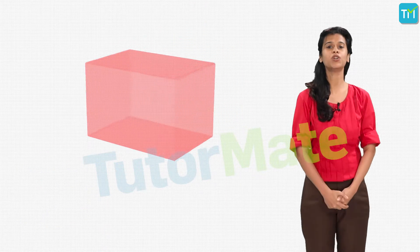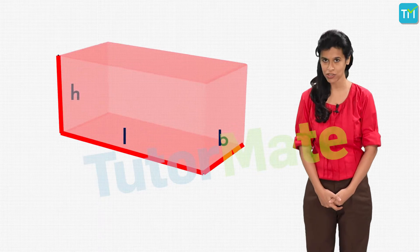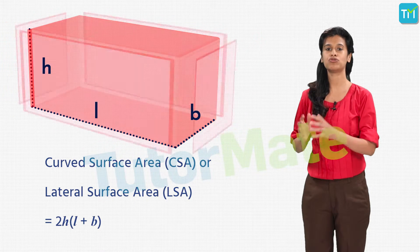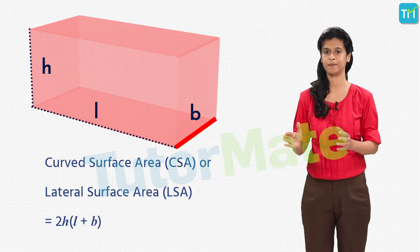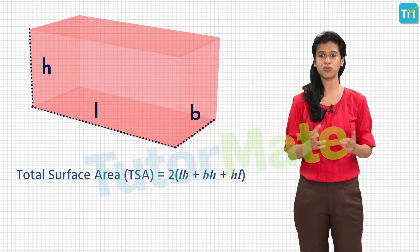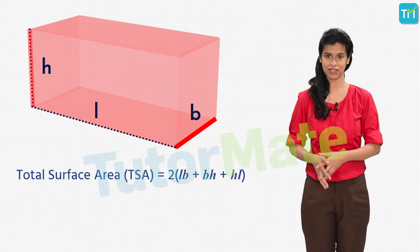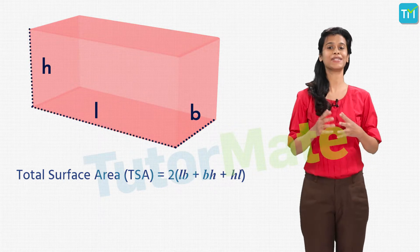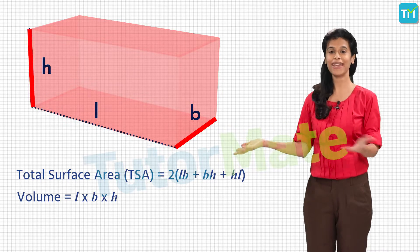Next, we will look at a cuboid whose length is L, breadth is B, and height is H. Its curved surface area is equal to 2H × (L + B). The total surface area is equal to 2(LB + BH + HL), and finally its volume is equal to L × B × H.